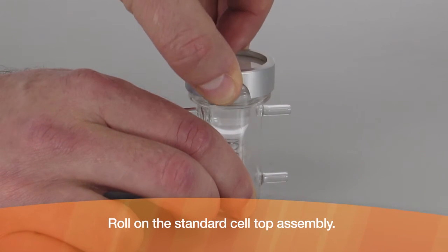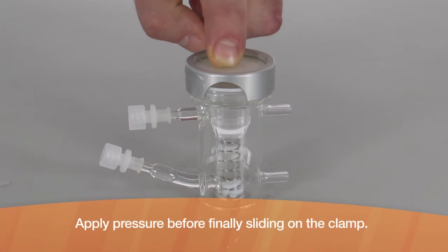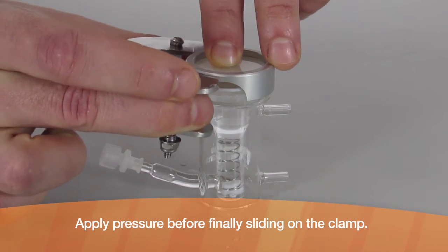Roll on the standard cell top assembly and apply pressure before finally sliding on the clamp.